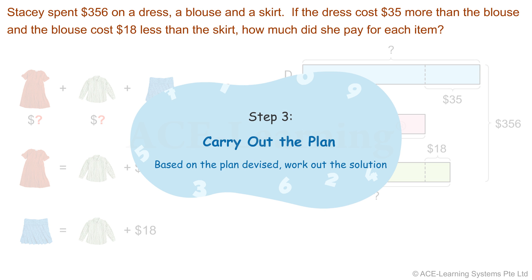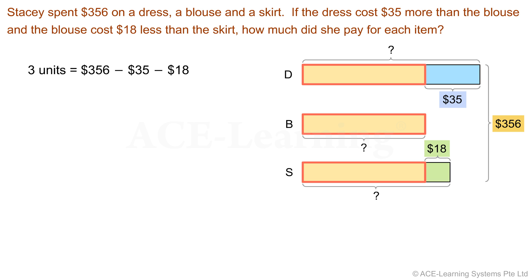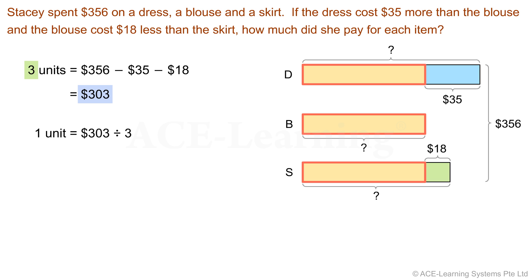Step 3: Carry out the plan. Based on the plan devised, work out the solution. It is always easier to work with whole and equal units. We have three whole and equal units. To find their value, we take $356 and subtract all the extra values: three units equal $356 minus $35 minus $18, which gives us $303. So one unit equals $303 divided by 3, which is $101. Let's place $101 in each of the equal units.